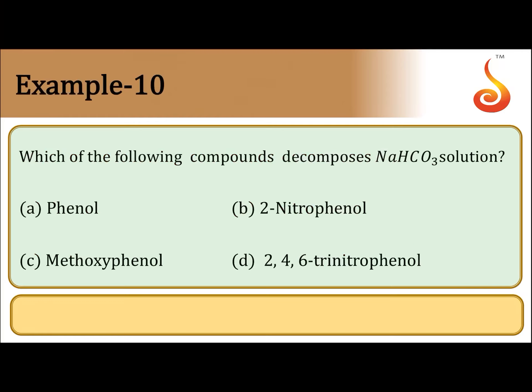So which of the following compounds decomposes sodium bicarbonate? The answer is 2,4,6-trinitrophenol. The reason is that when electron-withdrawing groups are present on the benzene ring, the acidity of phenol increases. In 2,4,6-trinitrophenol, there are three strong electron-withdrawing groups, and because of their presence, it decomposes sodium bicarbonate evolving carbon dioxide — it behaves as a strong acid.